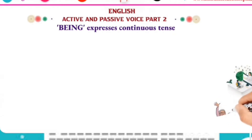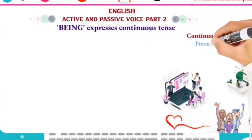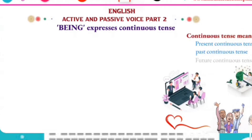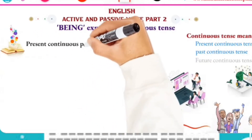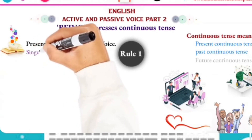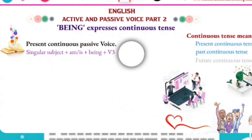In order to use passive voice correctly in the workplace or in formal writing, you need to follow the rule. If you consider the rule, there is a continuous passive set. Looking at the present continuous passive form, the formula is: singular subject plus am or is plus being plus verb three. That is the general form for present continuous passive.